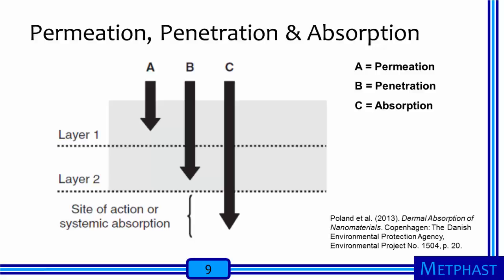This diagram from Poland et al. shows layers of the epidermis to illustrate terms related to the movement of materials through skin. Arrow A demonstrates permeation, where a material can enter a layer but does not necessarily go through. Penetration, shown by arrow B, is the capability of an agent to pass through a layer of the skin. So when you pass into a layer, you have permeated it; when you pass through the layer, you have penetrated it. If a material penetrates all layers of the epidermis — shown by arrow C — it has the potential to be absorbed into the body.